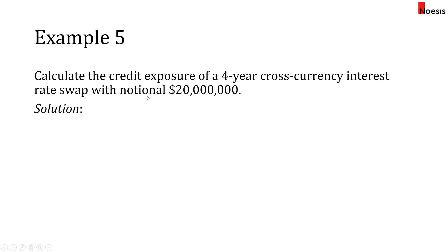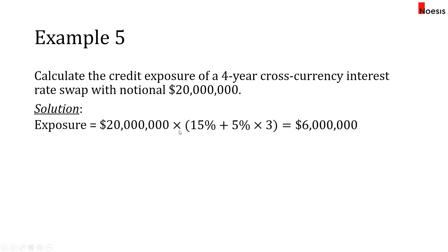Example five: calculate the credit exposure of a four-year cross-currency interest rate swap with a notional of twenty million dollars. The first year is fifteen percent, and every incremental year is five percent each. So take twenty million times fifteen percent for year one, plus five percent for each of the remaining three years — fifteen percent plus fifteen percent equals thirty percent — giving six million dollars exposure. That concludes the calculation of credit exposures for Module 8 on controlling risk.